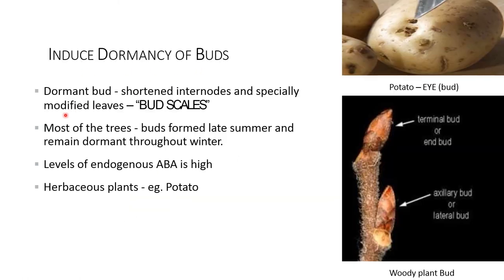Induced dormancy of bud: bud dormancy involves shortened internodes and modified leaves called bud scales. Most trees form buds in late summer and remain dormant throughout winter. Levels of endogenous abscisic acid are high in herbaceous plants, for example potato.